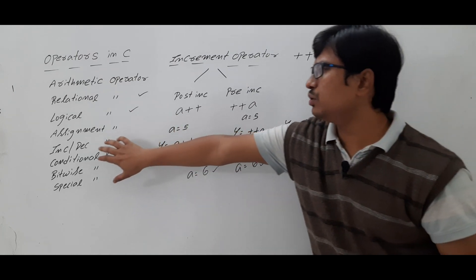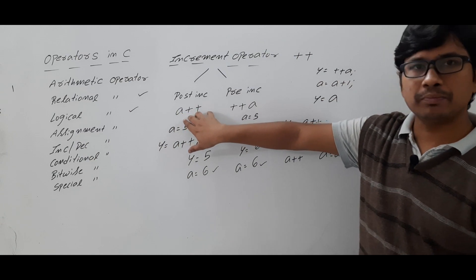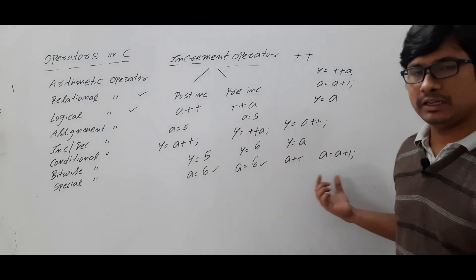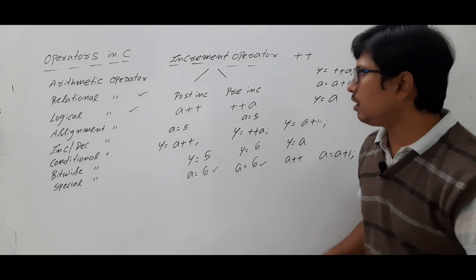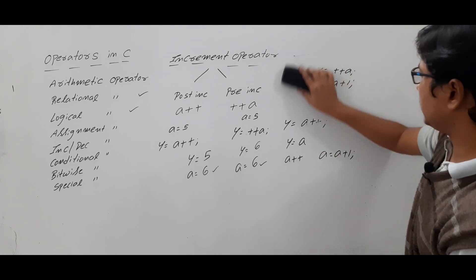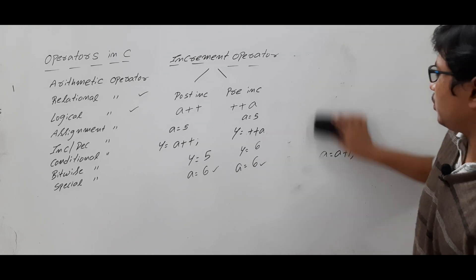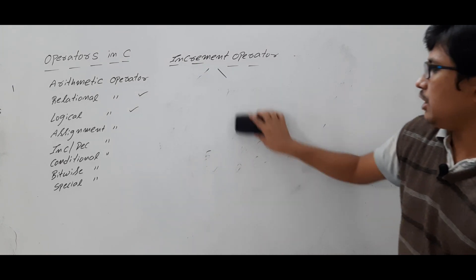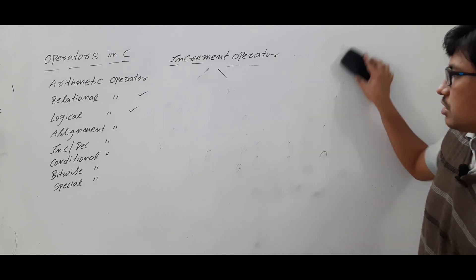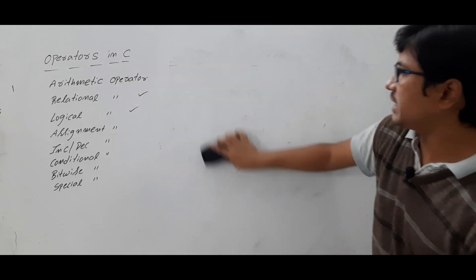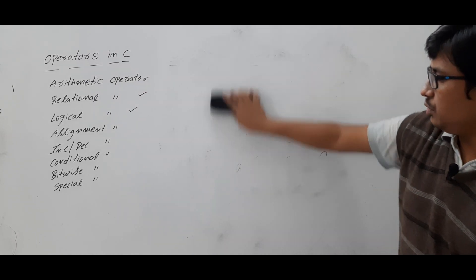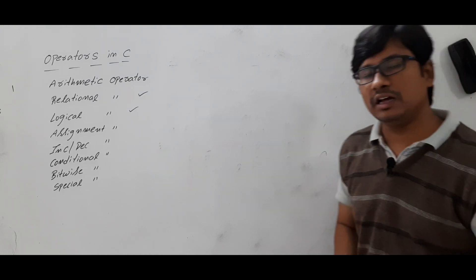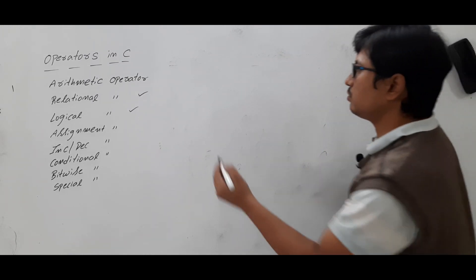Similarly, for the decrement operator, instead of performing addition you perform a decrement by 1. To make you understand better, let me write a single program for post increment and pre increment, and you predict or guess what is the output. If you guess correctly, then you have understood post increment and pre increment correctly, otherwise please watch the video again.